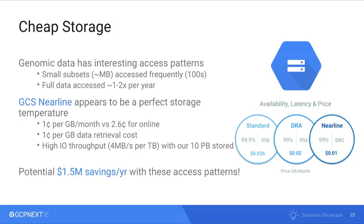With elastic storage, we also want cheap storage. Genomic data has interesting properties: very small subsets of that 100-gigabyte BAM file are accessed hundreds or thousands of times, but the full dataset is accessed maybe once or twice per year. GCS Nearline appears to be a near-perfect storage temperature for this — it's cheaper at about one cent per gigabyte per month versus 2.6 cents for online. We can save over a million and a half dollars a year just with these access patterns.